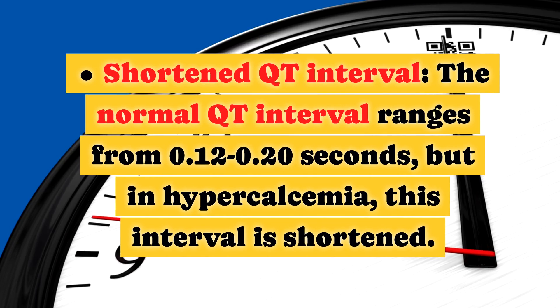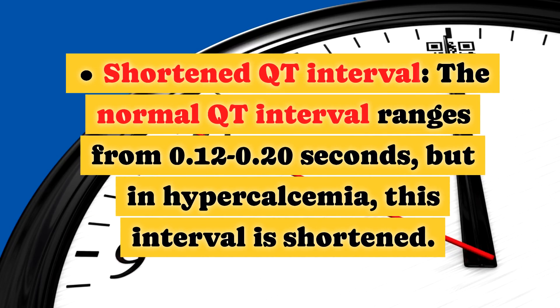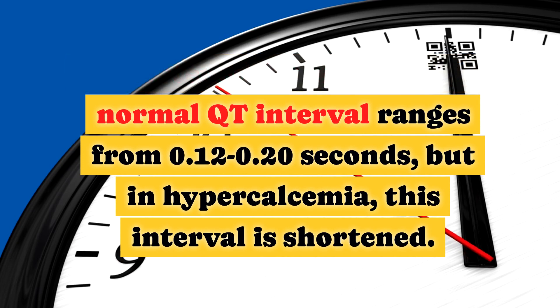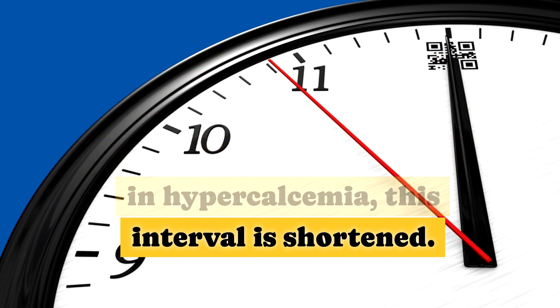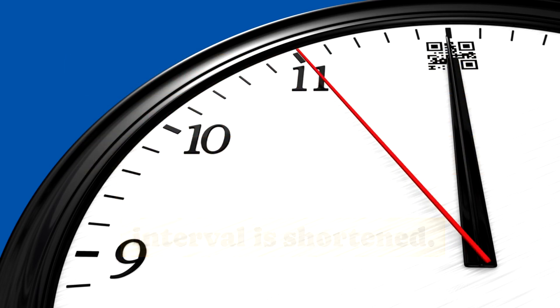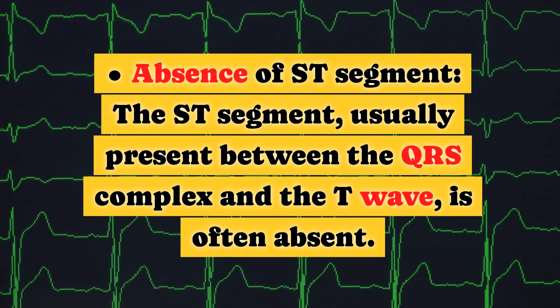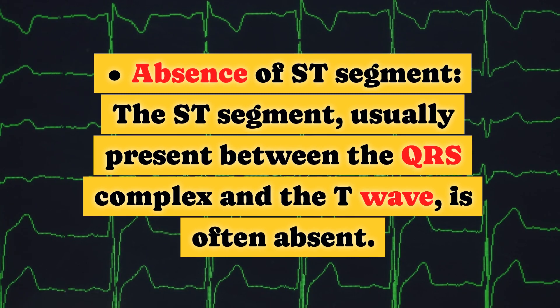Shortened QT interval: The normal QT interval ranges from 0.1 to 0.20 seconds, but in hypercalcemia, this interval is shortened. Additionally, the absence of the ST segment is observed.